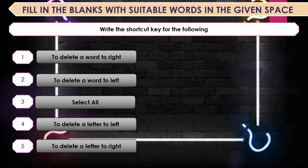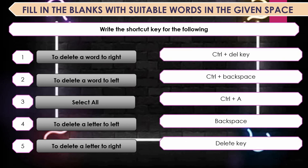Write the shortcut keys for the following: To delete a word to the right — Ctrl+Delete. To delete a word to the left — Ctrl+Backspace. To select all — Ctrl+A. To delete the letter to the left — Backspace. To delete the letter to the right — Delete.